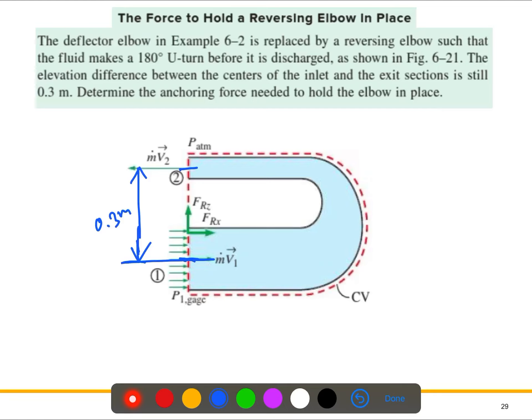In this case, you can see it is just the extension of the previous problem, but we just changed the angle. Previously it was 30 degrees and now it's 180. The inlet, outlet velocity, and the pressure at the inlet end of the elbow remain the same, but the vertical component of the anchoring force at the connection of the elbow to the pipe is zero in this case. So Frz is zero here.